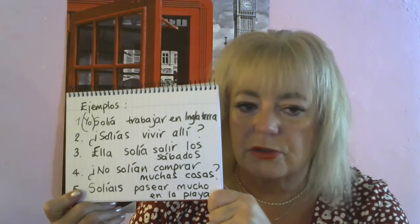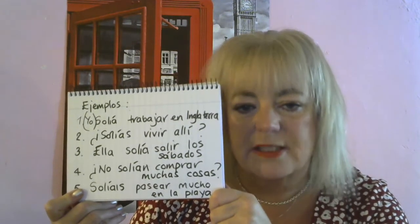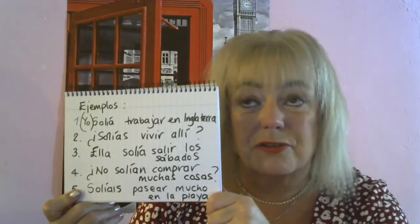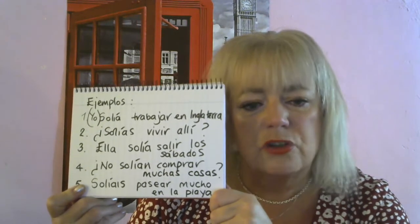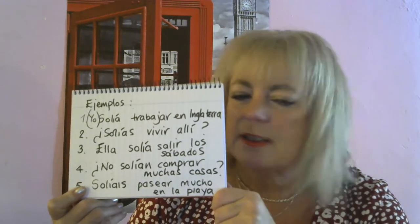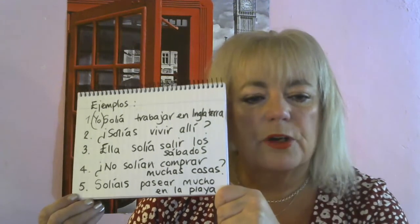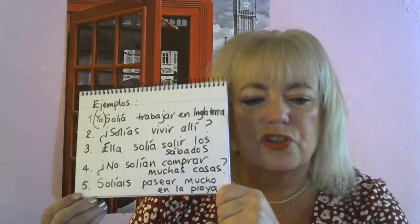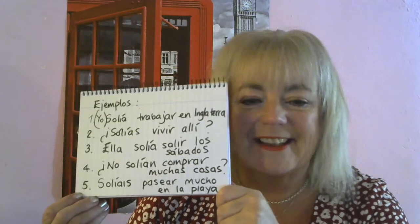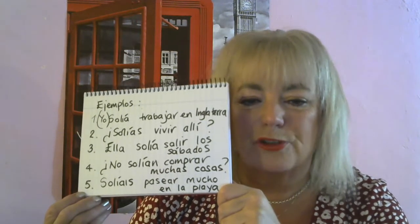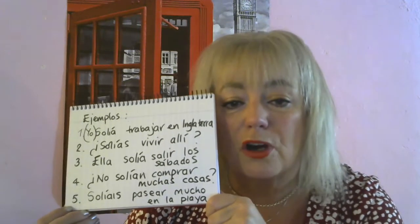Number four, a negative example: No solían comprar muchas cosas — didn't they used to buy a lot of things? And number five with the vosotros ending: solíais pasear mucho en la playa — you all used to walk a lot on the beach.